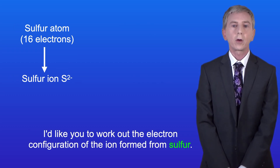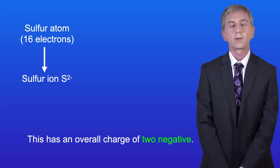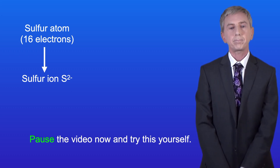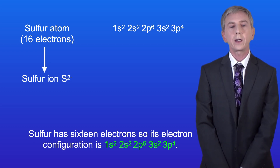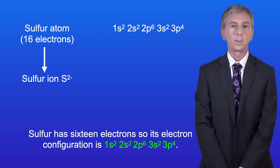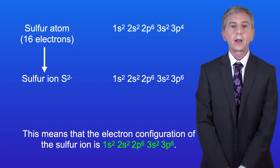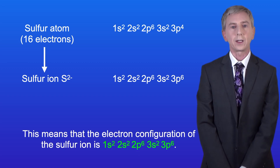Now look at the electron configuration of the ion formed from sulfur, which has an overall charge of 2 negative. Sulfur has 16 electrons, so its electron configuration is 1s2, 2s2, 2p6, 3s2, 3p4. Because the ion has a 2 negative charge, we know that the sulfur atom gained 2 electrons. This means that the electron configuration of the sulfur ion is 1s2, 2s2, 2p6, 3s2, 3p6.